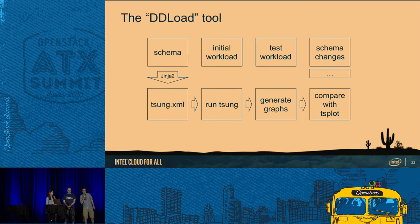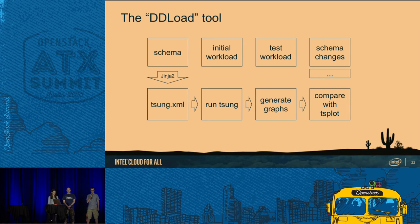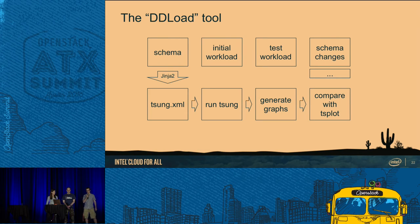The DDL load tool consists of an initial schema, an initial workload which fills the database, then we run the workload test and change the schema, and this is converted into an XML file. You can run these tests by typing make, generate graphs, and then compare these with TS plot to, for example, compare an empty test with one that changes a schema.